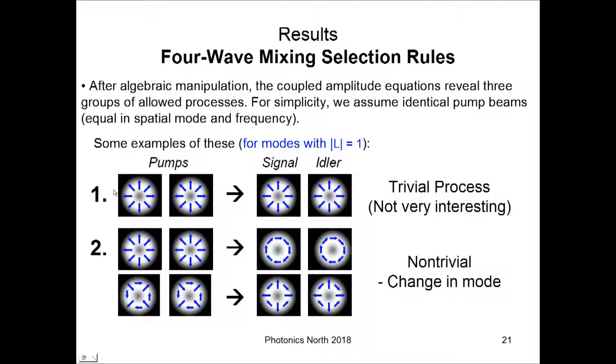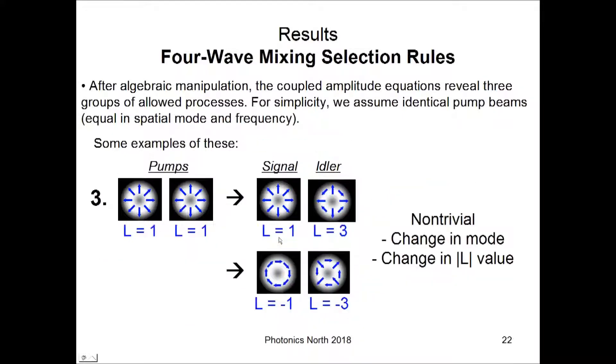The first of the selection rules is the trivial process. This isn't particularly interesting. This just says that whatever the pump input is, the signal and idler can have the same mode. So, radial can go to radial. Not too surprising. The second selection rule is a non-trivial one. This says that if you have the pumps being radial, those can convert to azimuthal or the other way around. And the two hybrid modes can convert between each other as well.